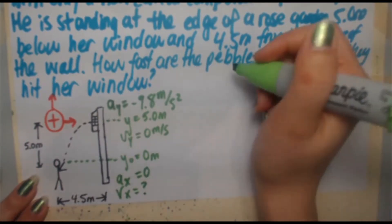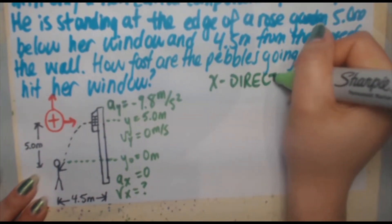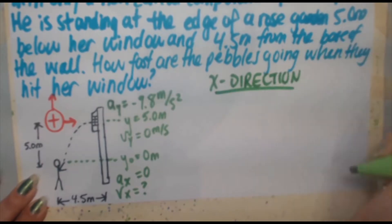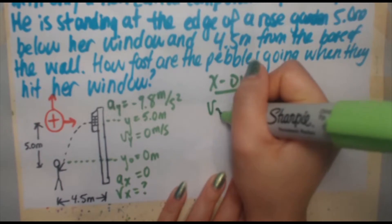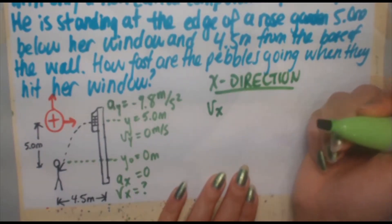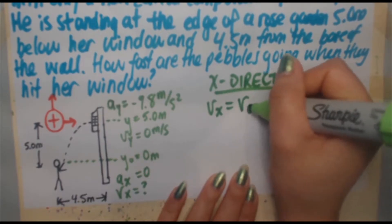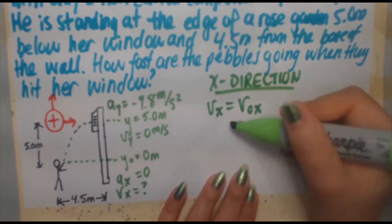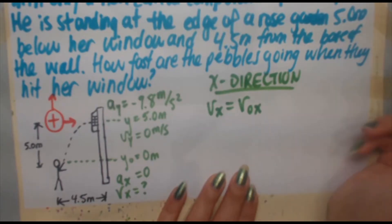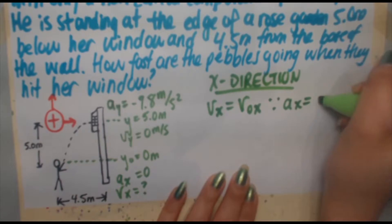We're going to start off in the x direction since this is the original thing that we're trying to find. How fast are the pebbles going? That means we're looking for vx. Now the initial x speed and the final x speed are the same because the acceleration in the x direction is non-existent. So we can make the statement vx equals v₀x since ax equals 0.